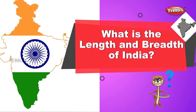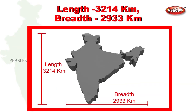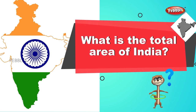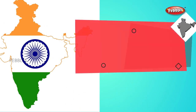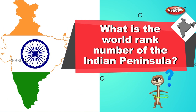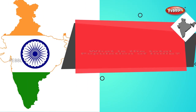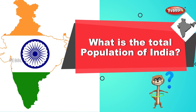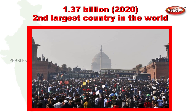What is the length and breadth of India? Length: 3,214 kilometers. Breadth: 2,933 kilometers. What is the total area of India? 3.287 million square kilometers. India is the seventh largest country in the world. What is the total population of India? 1.37 billion as of 2020.